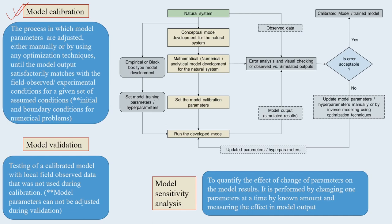In model calibration, what we try to do is adjust various parameters in the model manually or through different optimization techniques, until we get outcomes from the model which are satisfactory and in sync with the field or observed values. Once it matches, we can say that our model is calibrated and ready for further use.